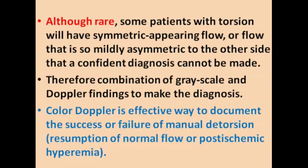Rarely, some patients with torsion will show symmetric appearing blood flow, and this mild asymmetric blood flow will not be significant enough to offer the diagnosis confidently. Therefore, a combination of grayscale and Doppler findings will lead us toward the diagnosis. Color Doppler is an effective way to document the success or failure of detorsion. If we see resumption of normal flow or post-ischemic hyperemia, it will be diagnostic for successful detorsion.